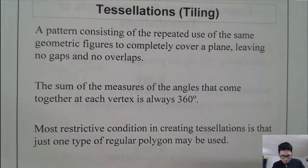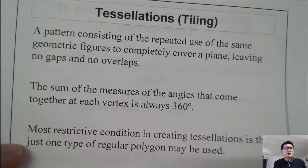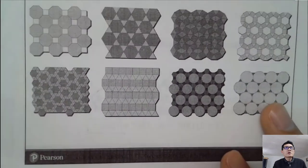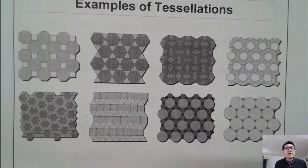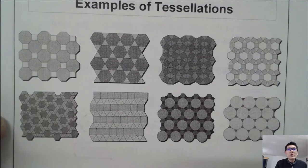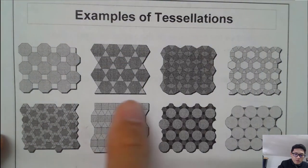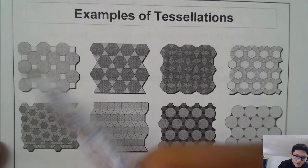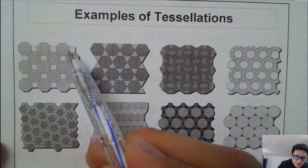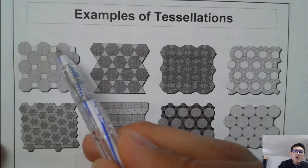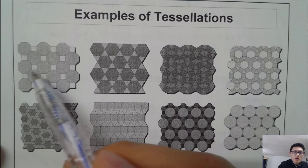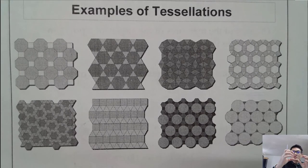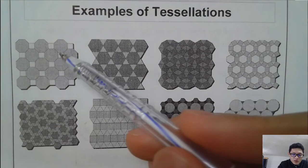Here is an example using two types of polygons to form a tessellation. We use an octagon — counting eight sides — together with small squares placed in the gaps. The octagons and squares are arranged next to each other to cover the entire plane with no gaps, holes, or overlapping. This is an example of a tessellation.